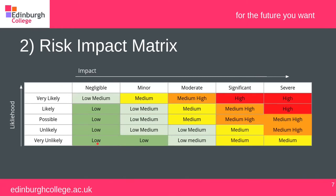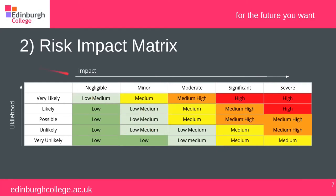There are all different combinations on the risk impact matrix — for example, a possible event with moderate risk lands in the middle. When thinking about risk posture, you need to figure out what you're willing to tolerate. Are you only concerned about the highest-risk items, or do you have a conservative risk policy where anything in the medium zone must also be dealt with immediately?